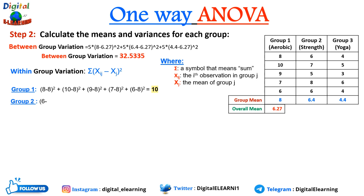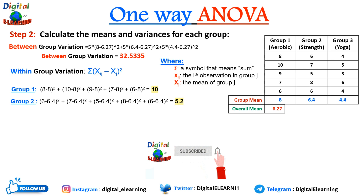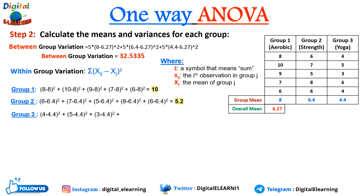For group 2 we compute (6 − 6.4)² + (7 − 6.4)² and so on, which gives 5.2. Similarly for group 3, the value also comes to 5.2. The total within-group variation is 10 + 5.2 + 5.2 = 20.4.